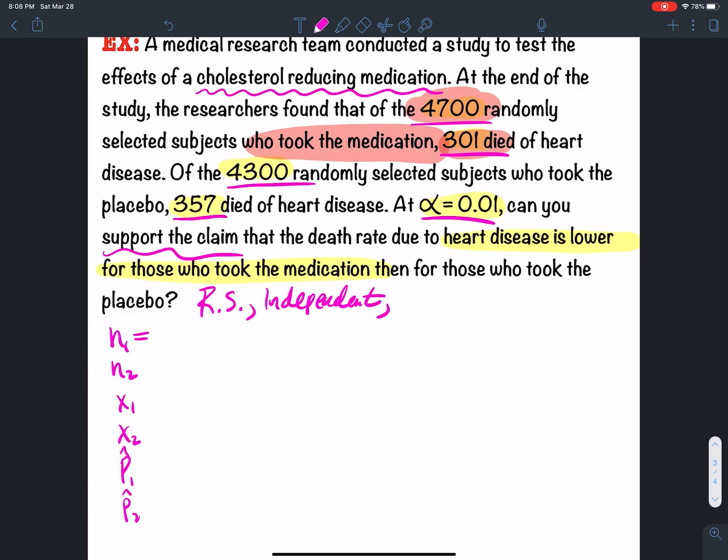So n1, we had 4,700 total, and then x1 equal to successes, 301 died.